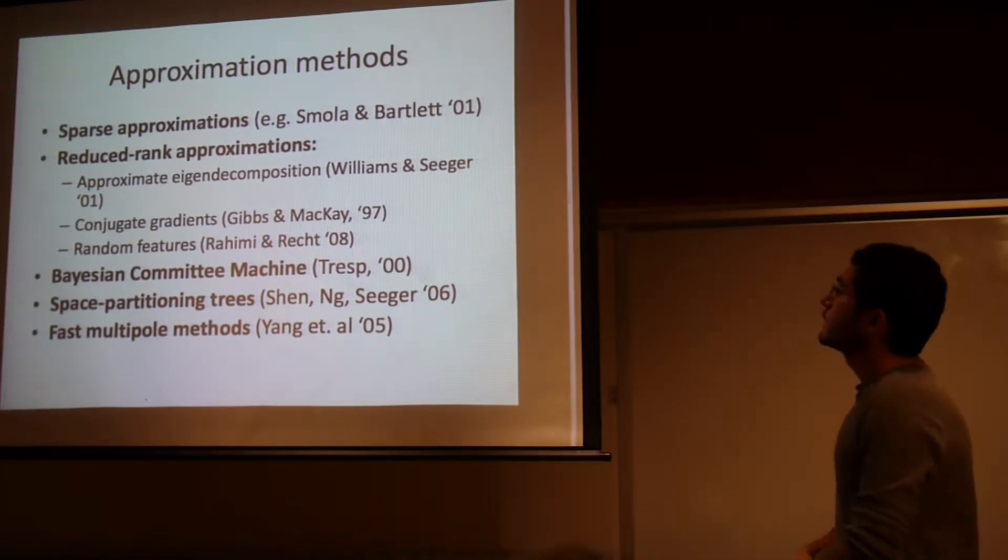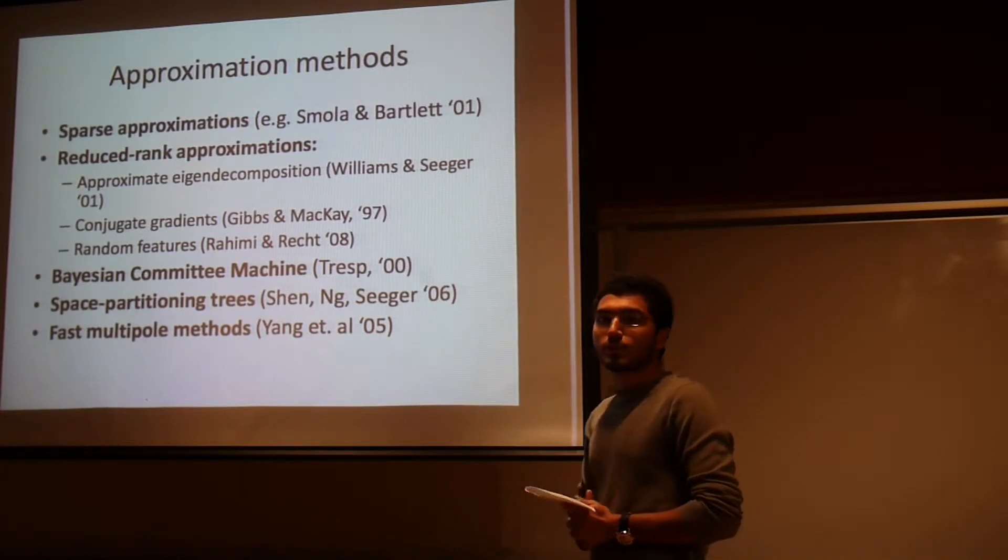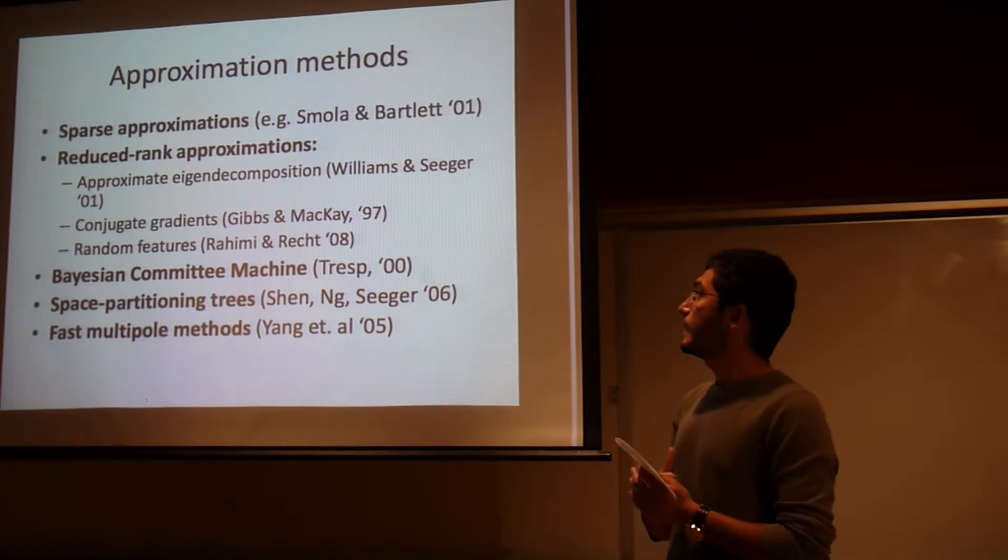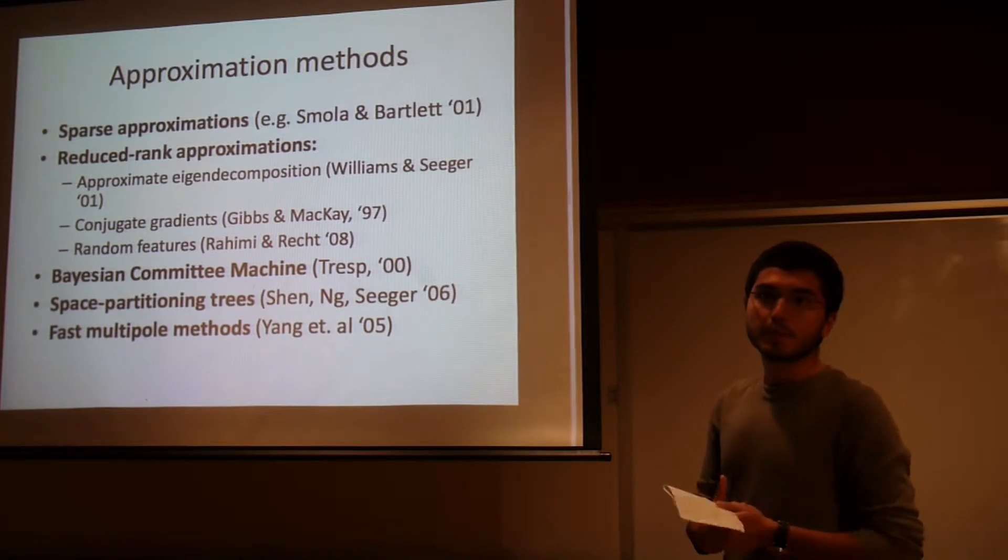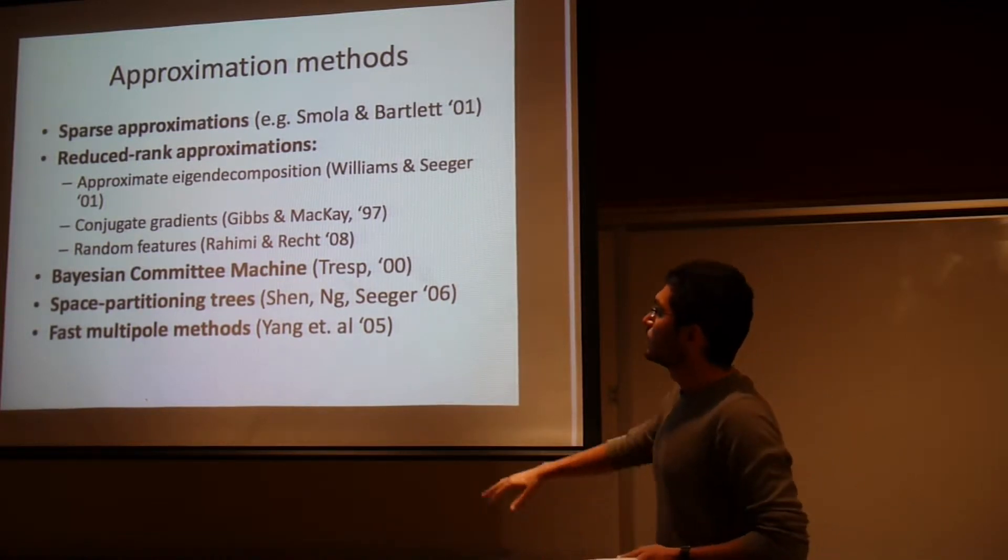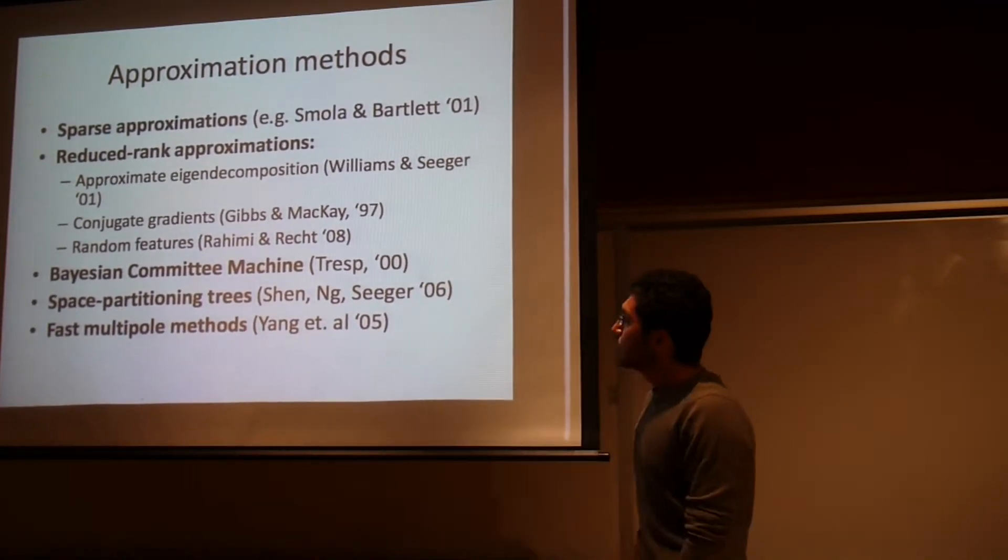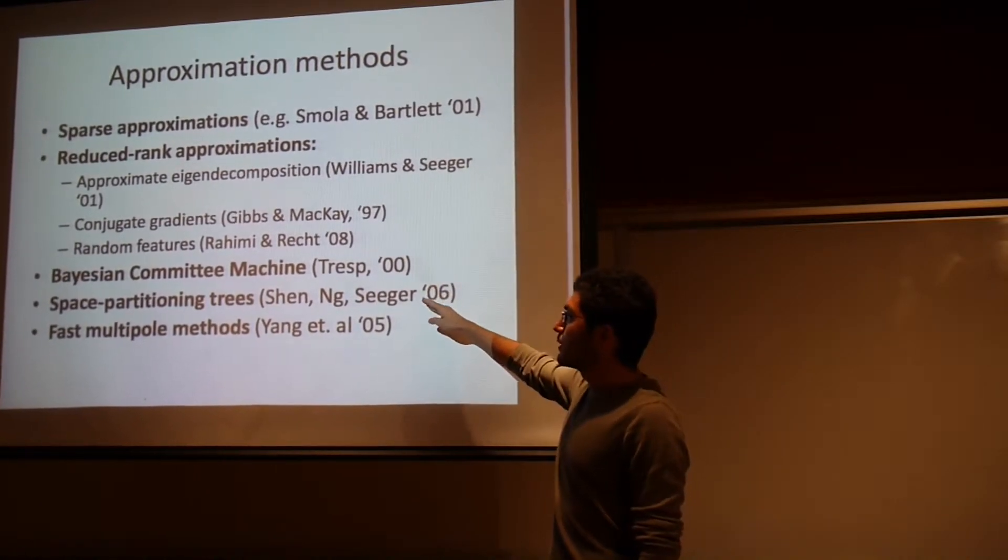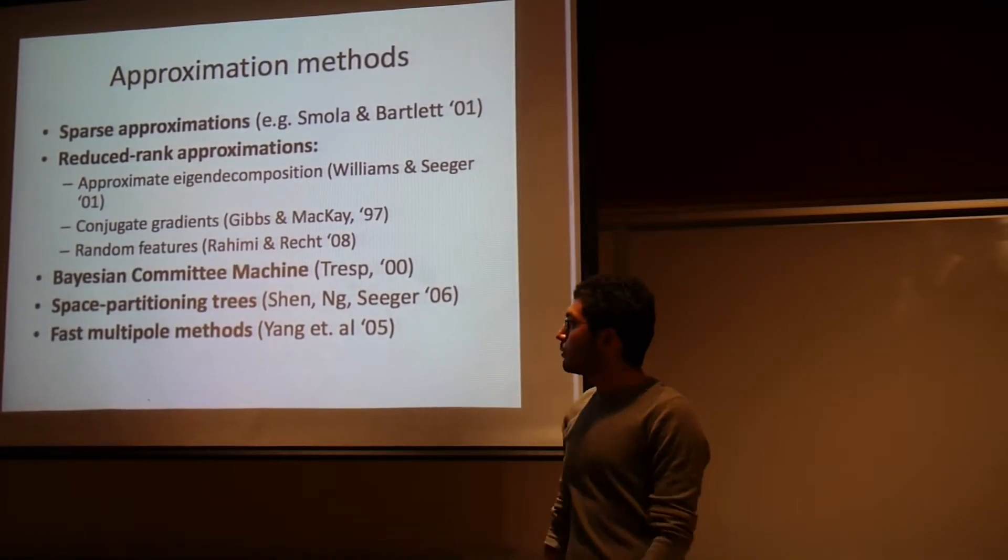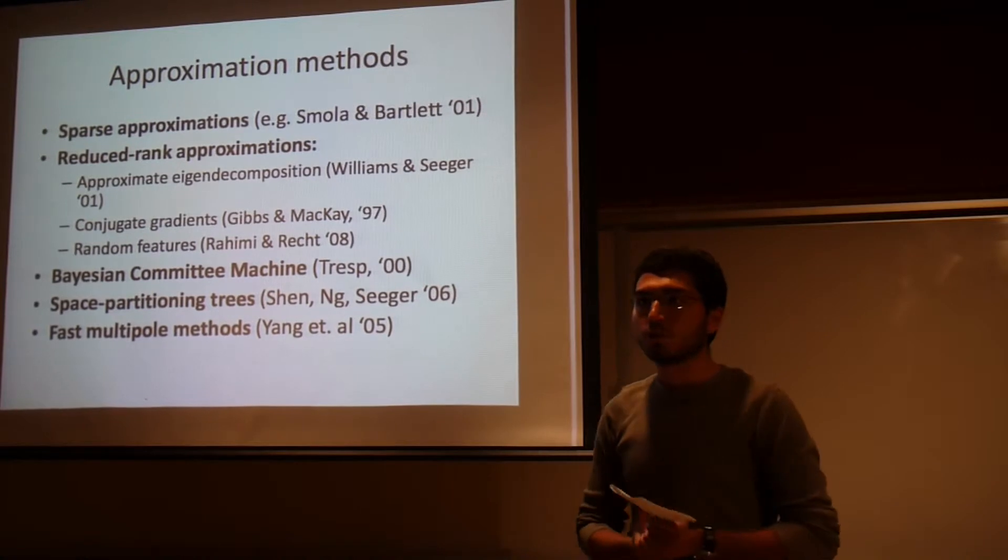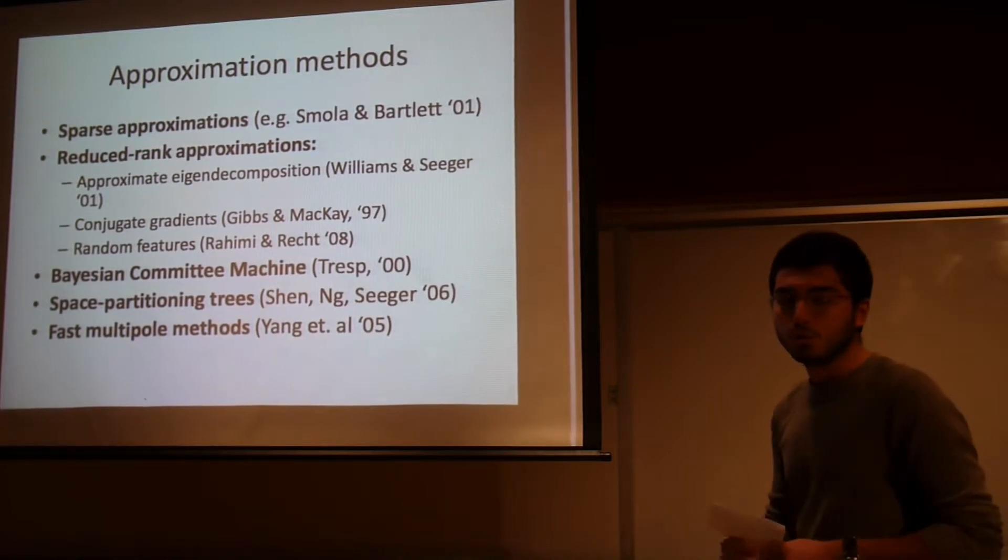So there are some approximation methods that have been applied in Gaussian processes. Sparse approximations—in sparse approximations you solve a linear system approximately as sparse as possible. There are reduced rank approximations where you just solve it in a subspace of interest. Random features is one of the things we're interested in. It's pretty useful and recent. There's Bayesian committee machine. There's space partitioning trees like KD trees and cover trees which let you partition your data. And there are fast multipole methods like fast transform and improved transform which allow you to speed up your matrix vector multiplications, which is something really important if you want to do subspace methods.